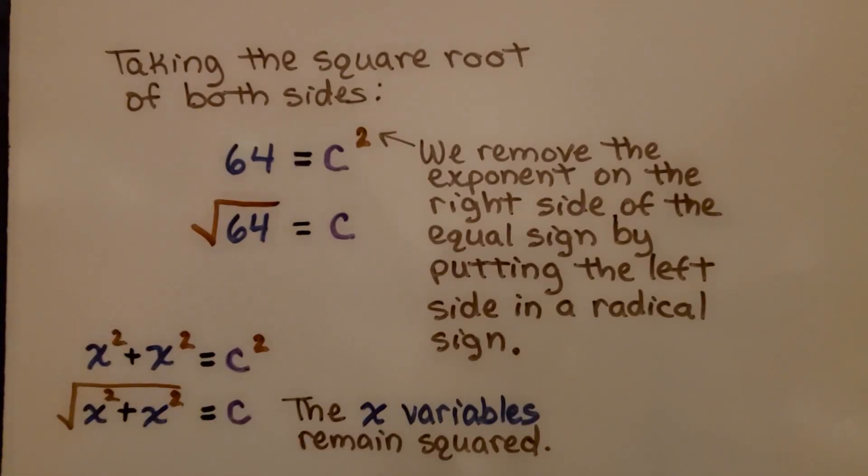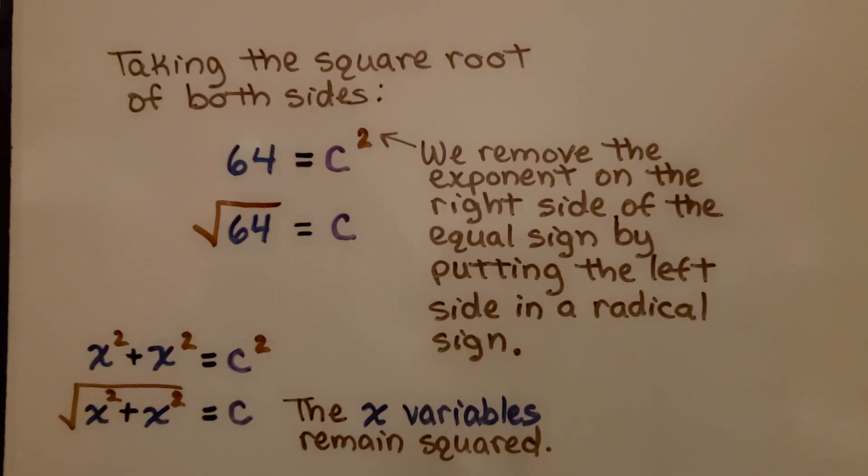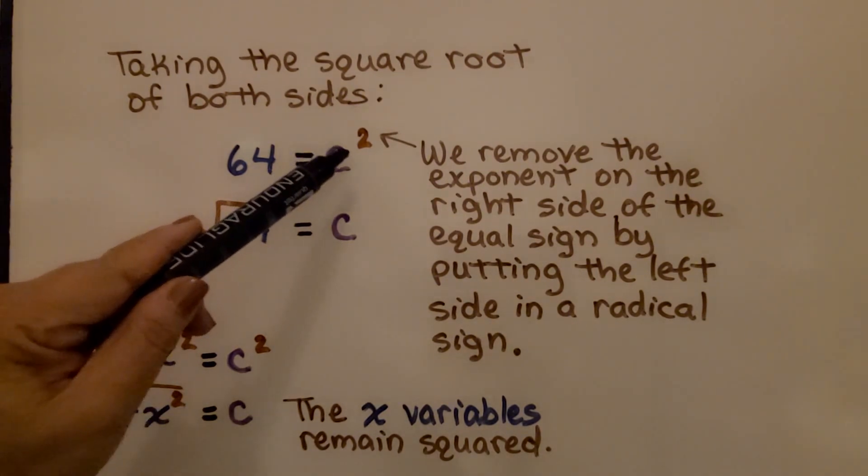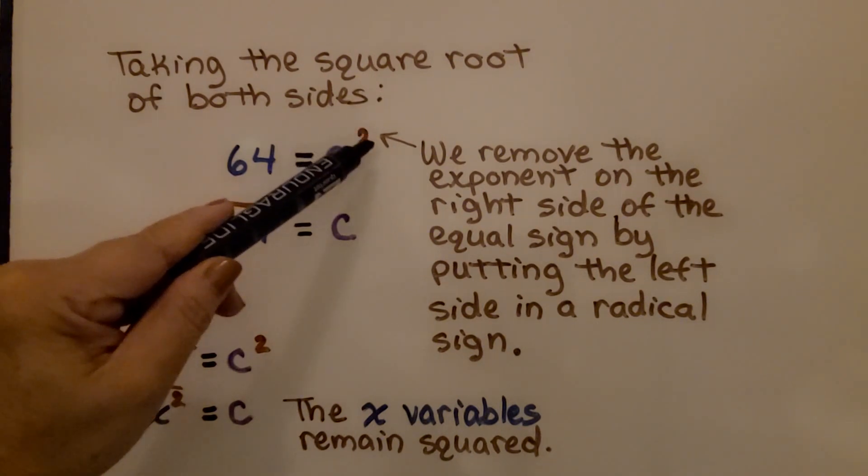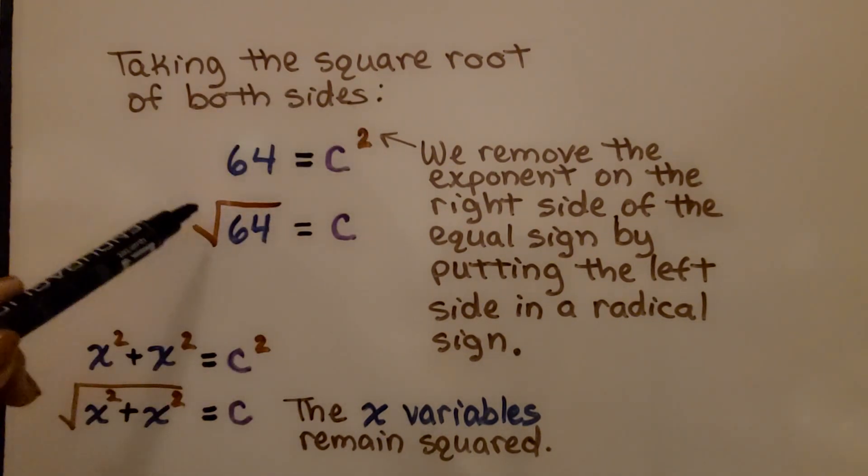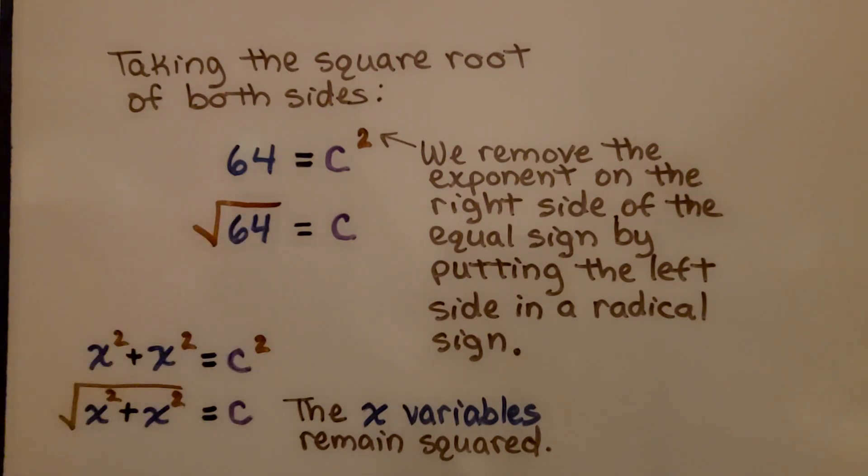So we've discussed this in the previous videos. Taking the square root of both sides means we remove the exponent on the right side of the equal sign by putting the left side in a radical sign. Then we find the square root of 64. Well, we did the same thing for this isosceles triangle. We had c squared, we remove the two exponent by putting a radical sign around the left side. Even though it has exponents up here, we still put the radical sign around them and the exponents. The x variables remain squared.